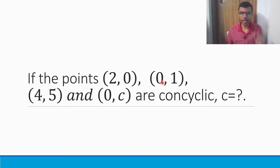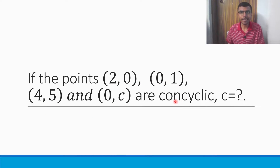Here, the points are concyclic. The points are (2, 0), (0, 1), (4, 5), and (0, C) are concyclic. If that is the case, then we have to find out the value of C, this small z.